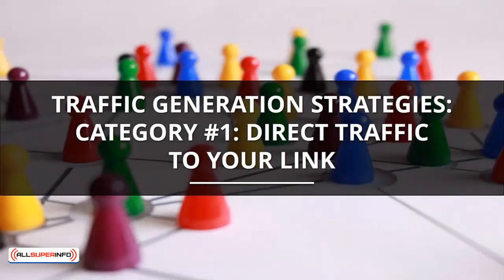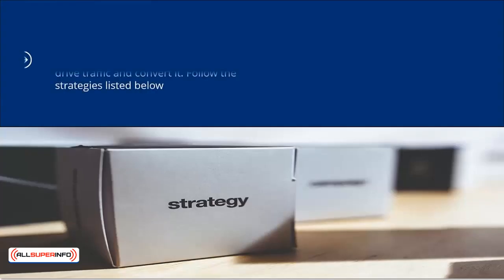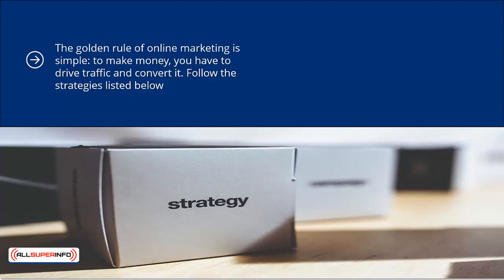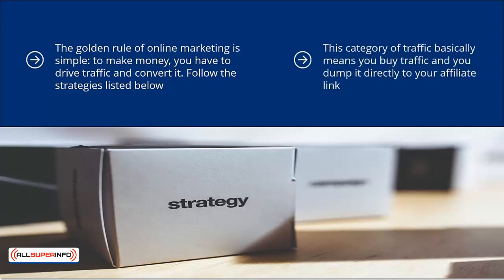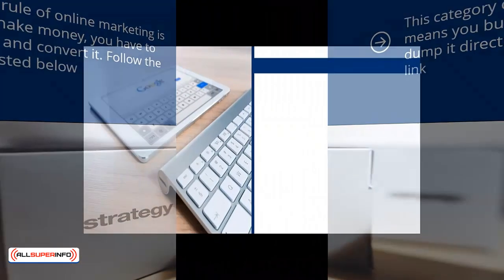Traffic generation strategies, category number one: direct traffic to your link. The golden rule of online marketing is simple — to make money, you have to drive traffic and convert it. This category of traffic means you buy traffic and dump it directly to your affiliate link. You don't redirect, you don't create content with your affiliate link embedded; instead, you buy traffic and pump it directly to your link.